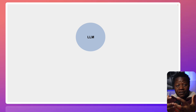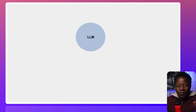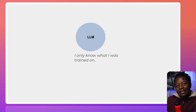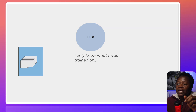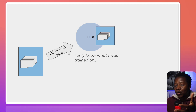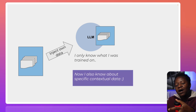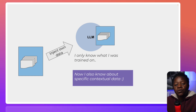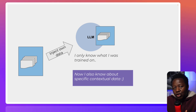The problem is the model only knows what it knows. So it's important that if we want to augment our system — make it so that we can pass our own documents into the large language model — it would then know more than it already knows. This is important because the model will have context of newer, specific information that you pass in. That's when you would use RAG, Retrieval Augmented Generation.